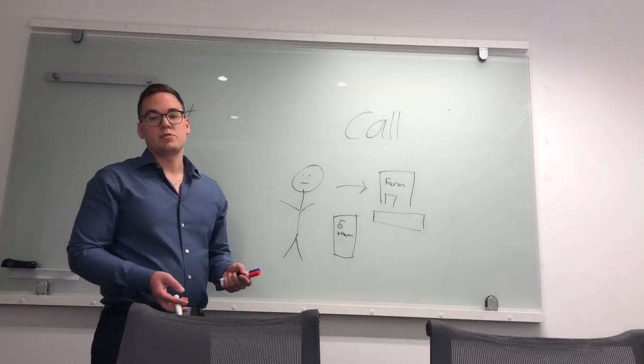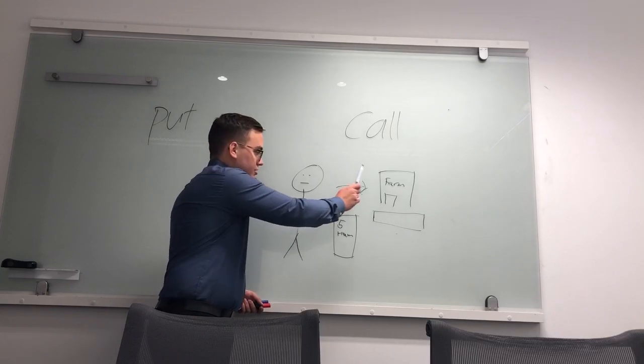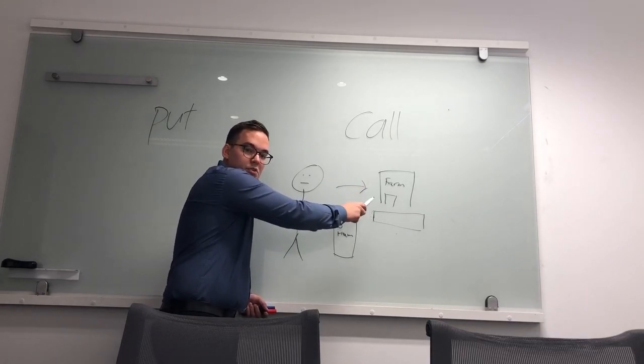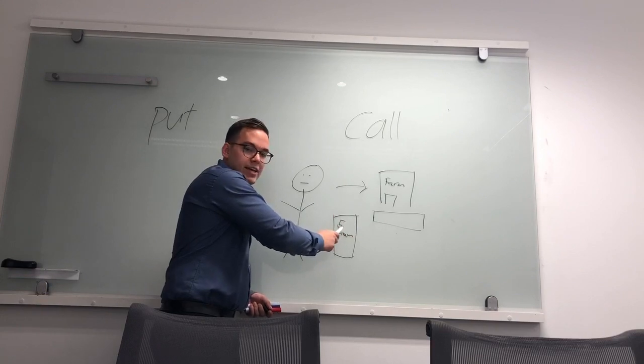This is what's called a buy option. Johnny here pays $50 to the farm owner. The farm owner in turn guarantees Johnny the right to buy ham for a set price on Christmas.